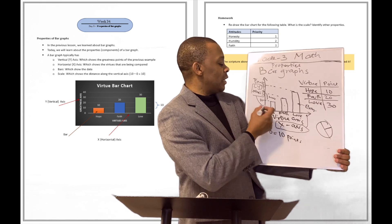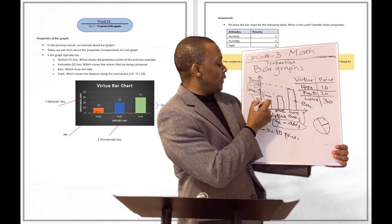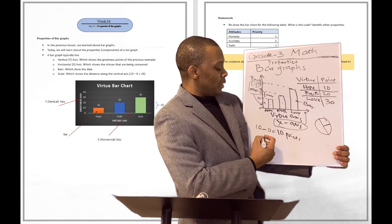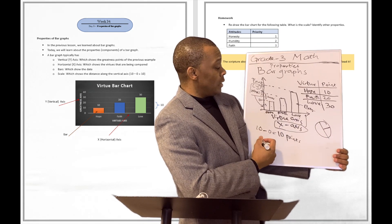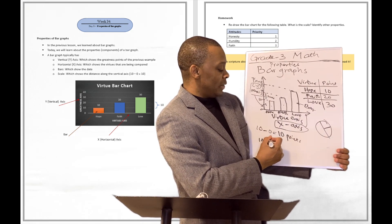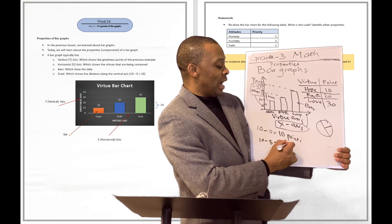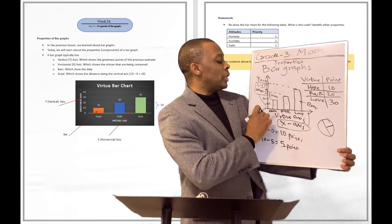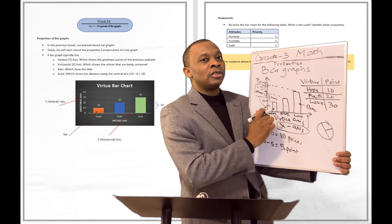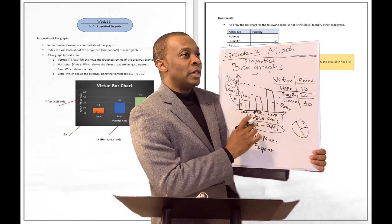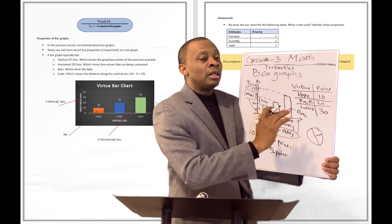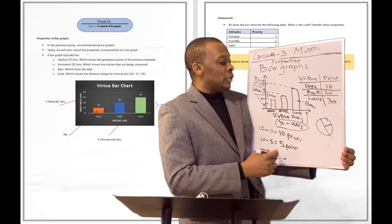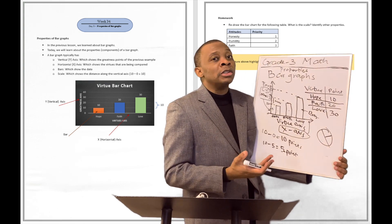There may be other scales. Like if this were to be five here and another 15 there, then the scale of the bar graph in that case will be 15 minus 5, which is going to be a five-point scale. So look at the vertical axis, look at the higher point, then subtract the lower point from it — you're going to get your scale.